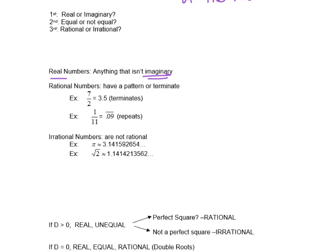So rational numbers have a pattern or terminate. For example, 7 over 2 is 3.5. That terminates, that is a rational number. 1 over 11 has a repeating pattern, it's .090909. So when the pattern repeats, that is also rational.